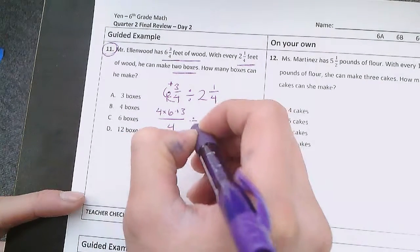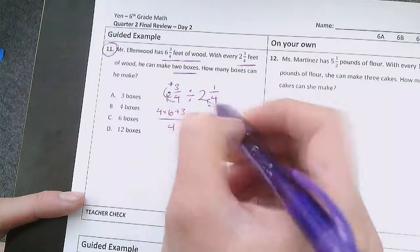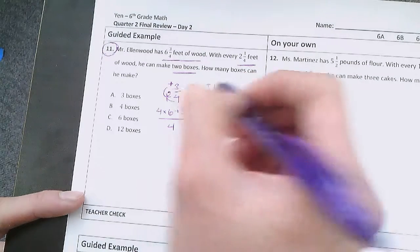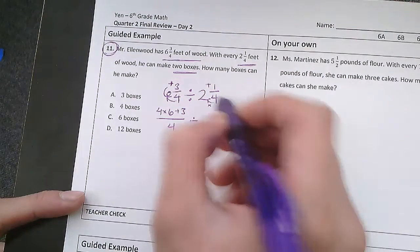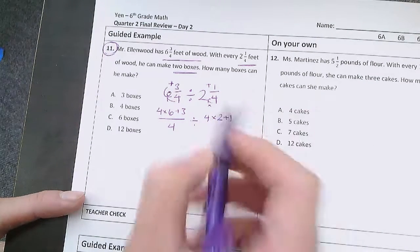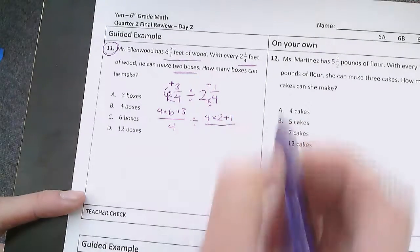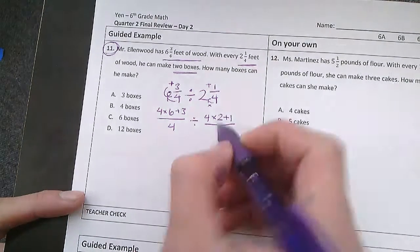It's going to be all of this divided by 4 times 2 plus 1. The denominator times the whole number plus the numerator over the original denominator which was 4.